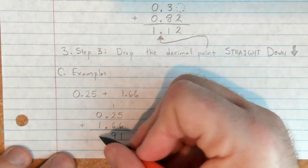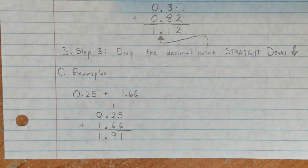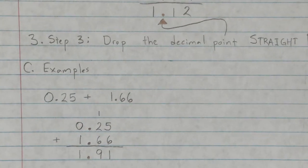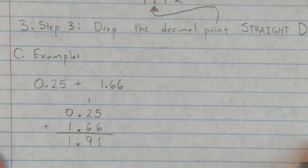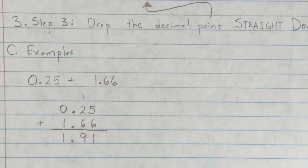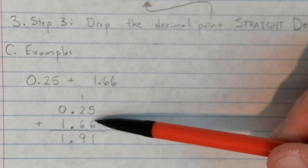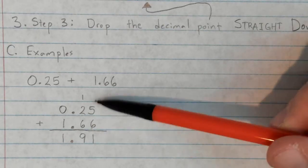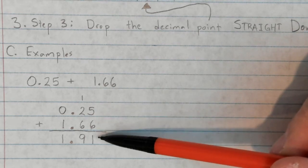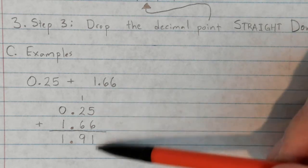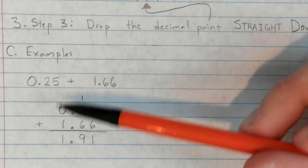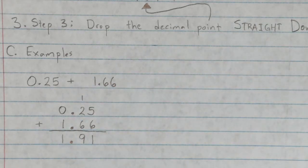This is a lot easier with graph paper. We're doing it on lined paper for notes, but with graph paper you put one digit in each box and everything stays lined up — nice, clean, and straightforward. I'll show you some demonstrations in class.